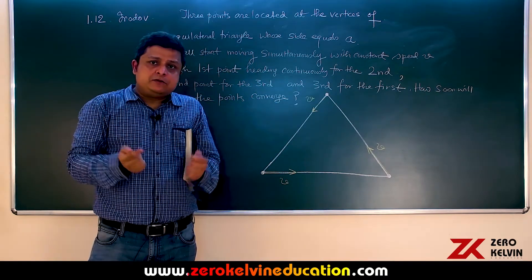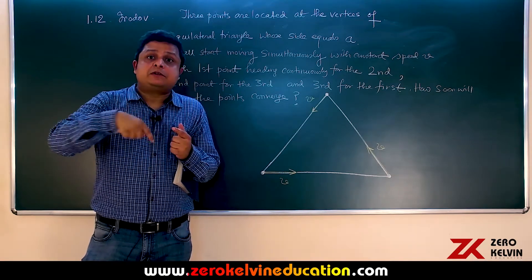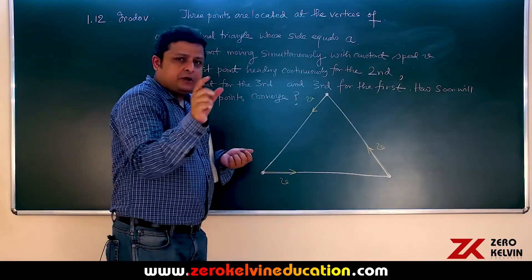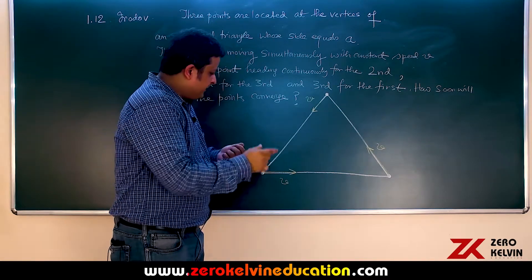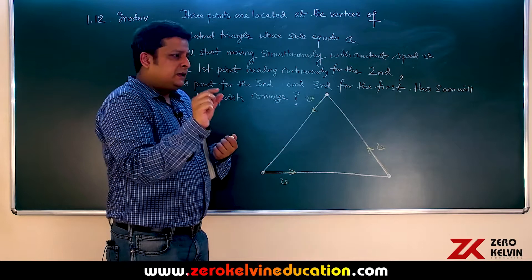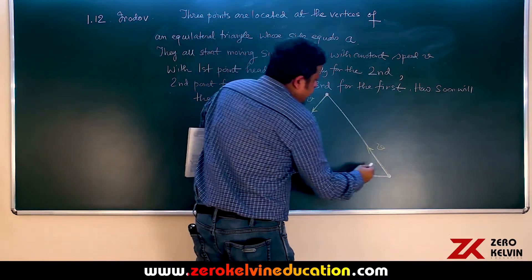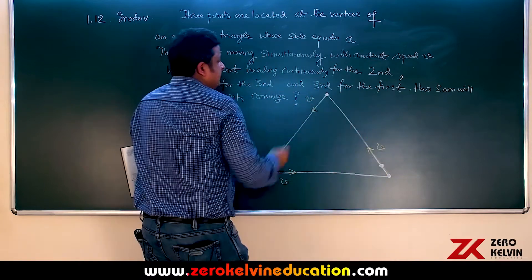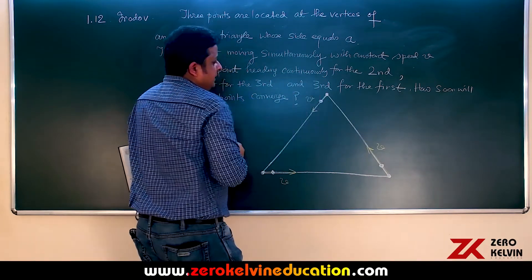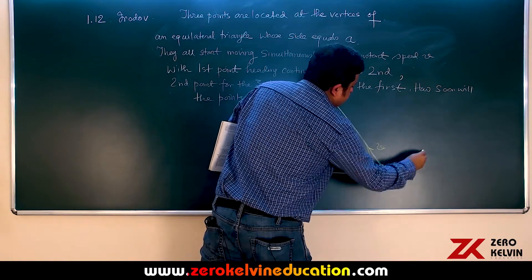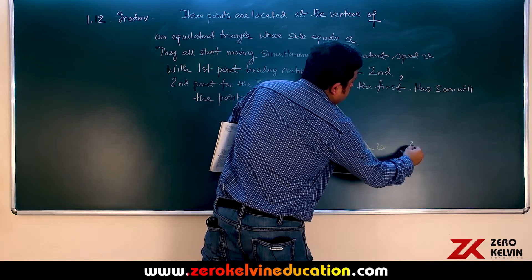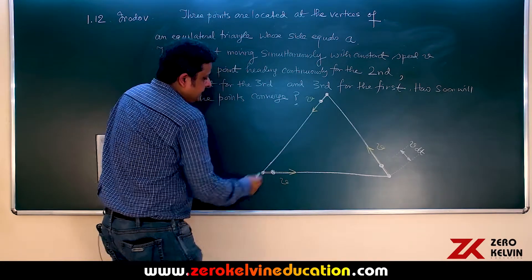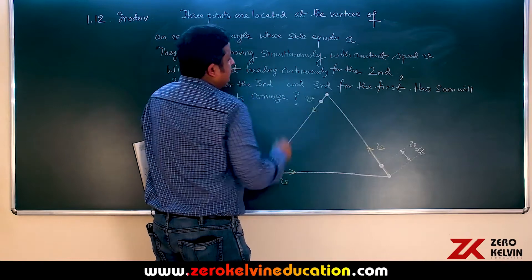This continuously heading towards each other is a continuous process. After a small time dt, the first particle will move — for a very small time dt we can regard the displacement as a straight line. After time dt, the first particle has moved a very tiny distance V·dt. So this distance is equal to V·dt. After time dt: the first particle is here, the second particle is here, and the third particle is here.